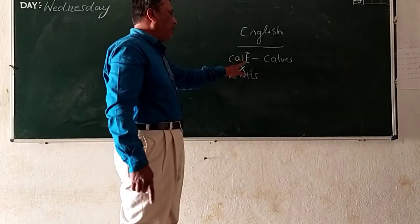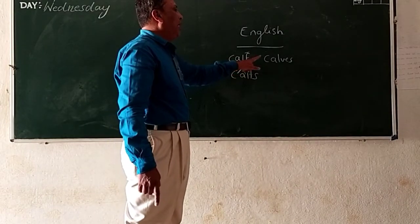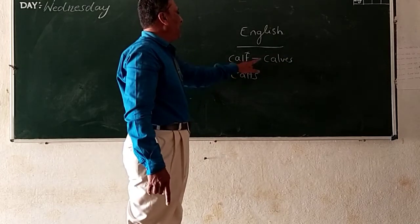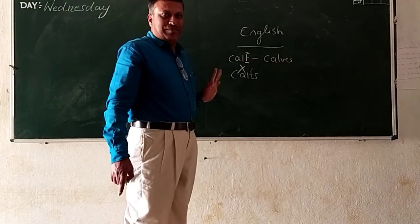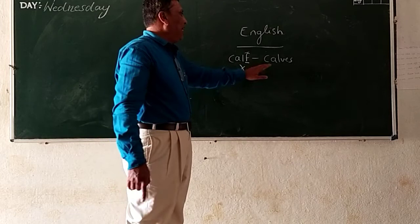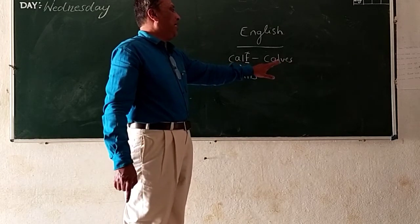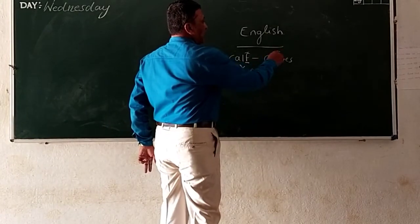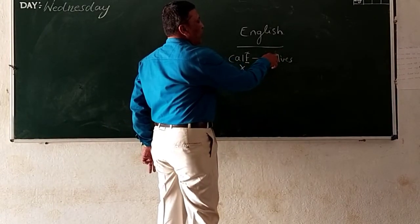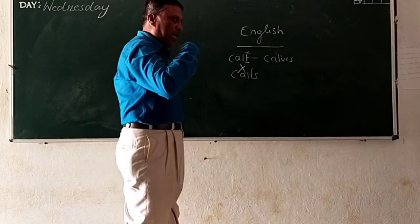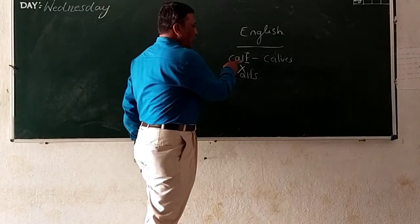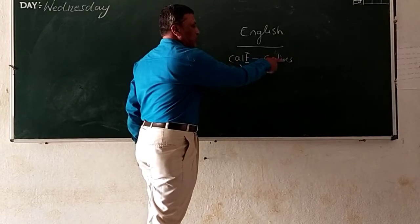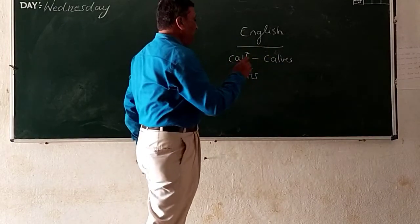If F is the last letter, we are going to make it V-E-S. C-A-L-V-E-S. This is not C-A-L-O-V-E-S, it is calves. L is silent. Here L is, we don't want to pronounce the L. Here also, calf. It is not calf, it is calf. So you see here.